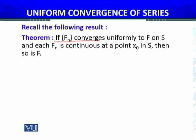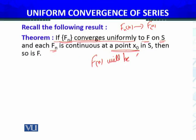I am recalling this for the sequence of functions. If f_n, which is a sequence of functions, converges uniformly to f — that is, f_n(x) converges to f(x) on the set S — and each f_n is continuous at a point x₀ in S, then so is f. It means f(x) will be continuous at x equals x₀.